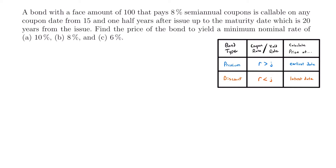If the coupon rate is less than the yield rate — meaning the bond would be bought at a discount — then we want to calculate the price at the latest date possible, which will typically be its maturity date. The reason the date changes depending on the type of bond is because we want the lowest possible price. That word 'minimum' is key: we want to find the lowest price for the bond given that yield rate. This table allows us to do that if we calculate the price at the right moment in time.